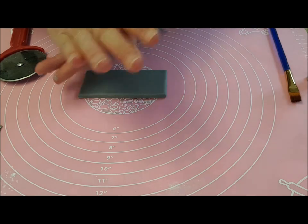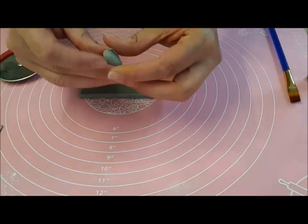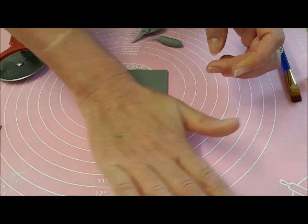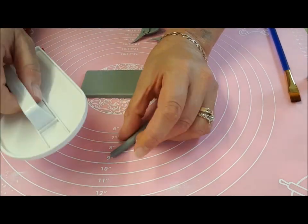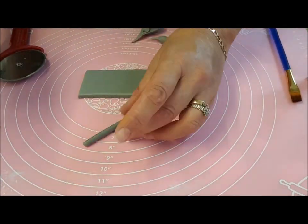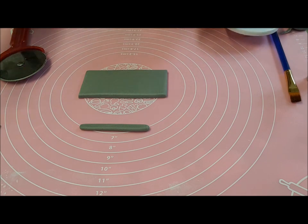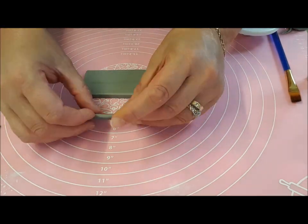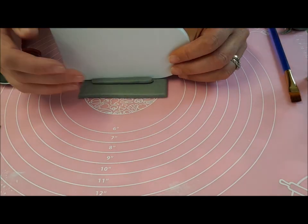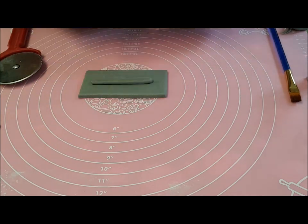Just smooth around the edges so that you've got it nice and neat and then you want to be rolling out a thin piece, flatten that down and just stick that onto the top of that. Make sure it's all even.